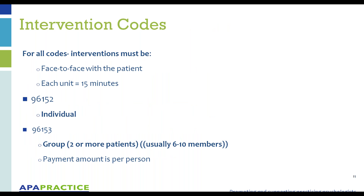The intervention codes are face-to-face with a client, each unit being 15 minutes. Unlike other intervention codes, we have a variety based on the type of situation. If you're working directly with a patient and no one else, that's 96152 — individual. If you're working with two or more patients, usually six to ten patients at any one point, you use 96153. Importantly, 96153 is billed for each individual patient — not just for all patients combined, but each patient, John Doe, Jane Smith — each one gets 96153.